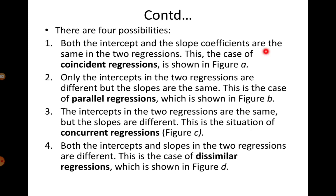The first possibility is where the intercept and slope coefficient remain the same — that is, both regression functions are coincident. If this is the case, the entire 20-year period from 1975 to 1995-96 has the same functional relationship between savings and income. Another possibility is that only the intercepts of the two regressions change, but the slope — that is, the change in savings due to a unit change in per capita GNP — remains the same. In this case, we have what is called parallel regression.